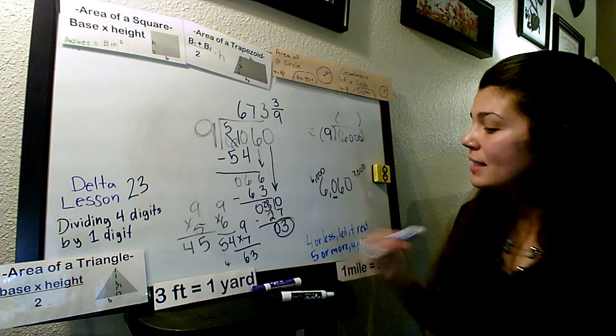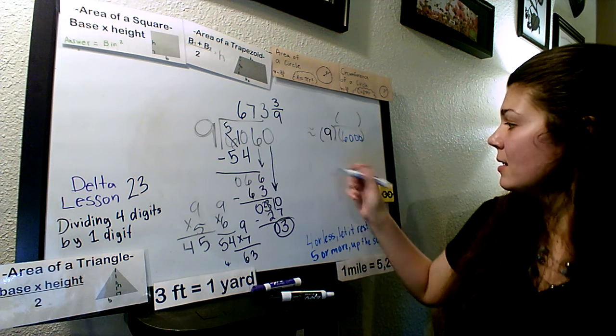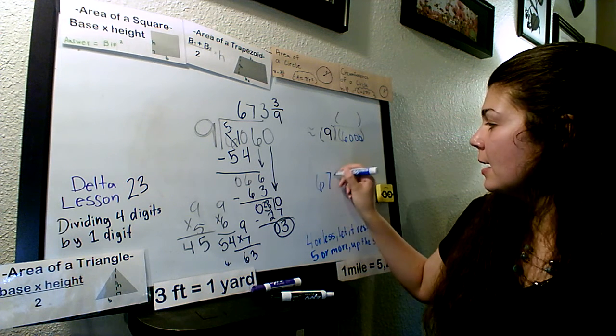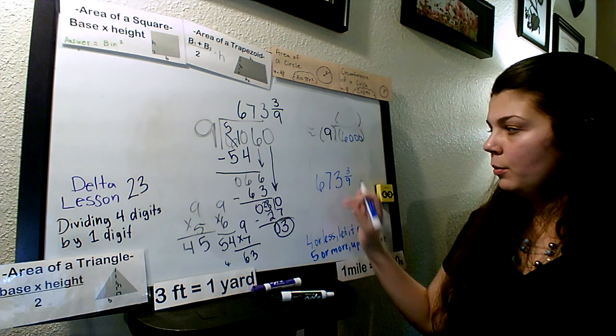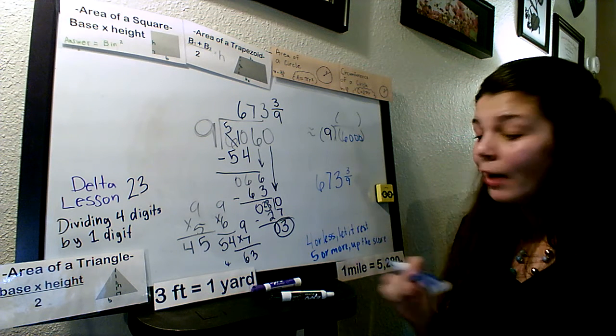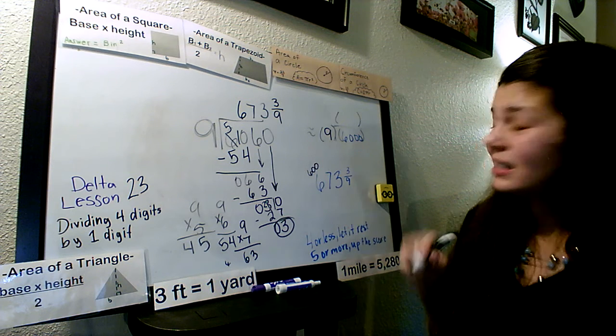And let's go ahead and come over here. Our number was 673 and 3 ninths. 673 and 3 ninths. Oh, we're in the hundreds place. We're going to round to hundreds. Alright. Our first one is right here for us. Easy peasy.